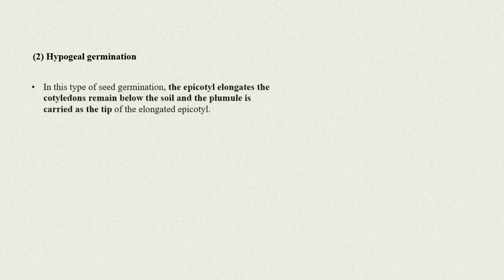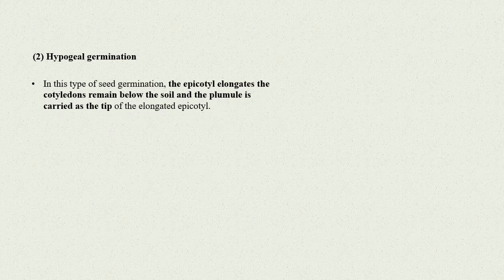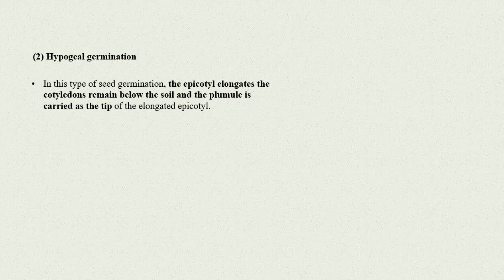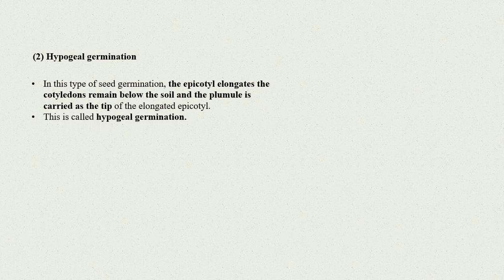Hypogeal germination: In this type of seed germination, the epicotyl elongates, the cotyledons remain below the soil, and the plumule is carried as the tip of the elongated epicotyl. This is called hypogeal germination.